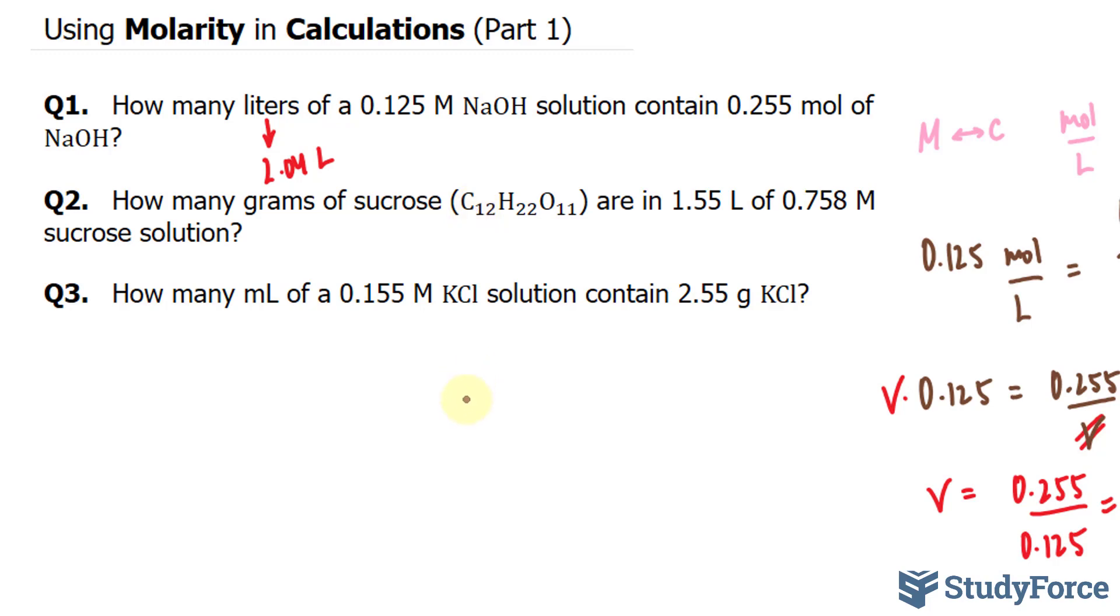First, my formula for molarity is N over V, where N represents the number of moles, V represents the volume in liters, and M represents the concentration, the molarity. I'm going to find N first.